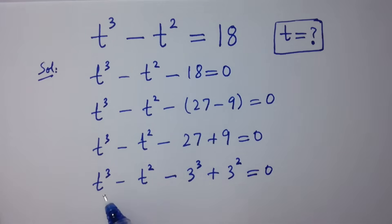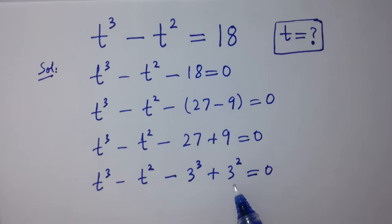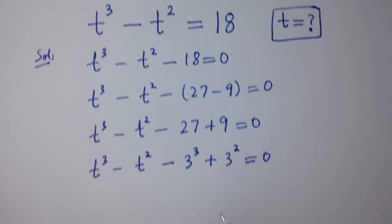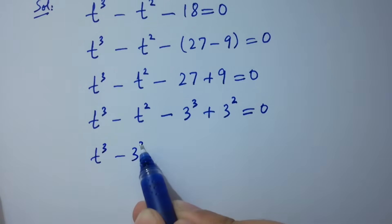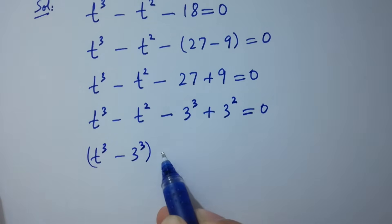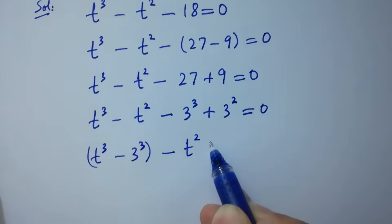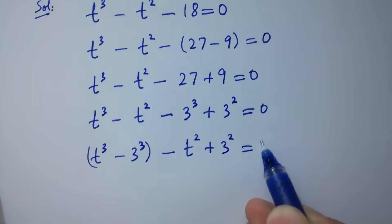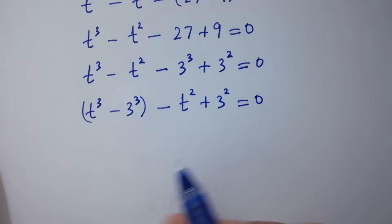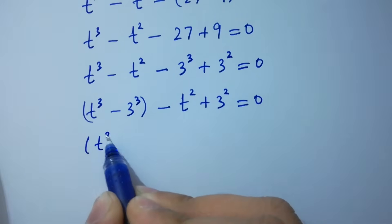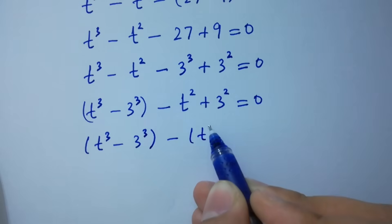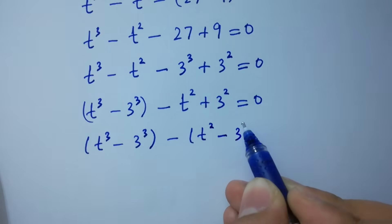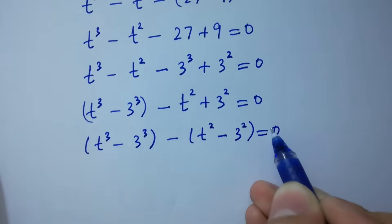By correspondence, here is t³ and here is 3³, here is t² and here is 3². So this becomes t³ - 3³ - (t² - 3²) = 0.